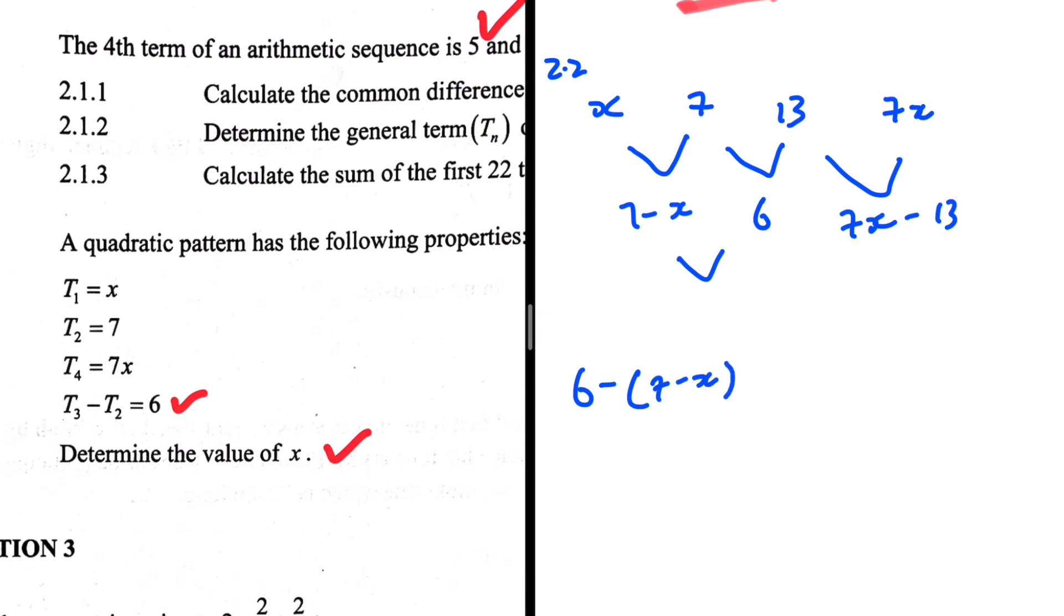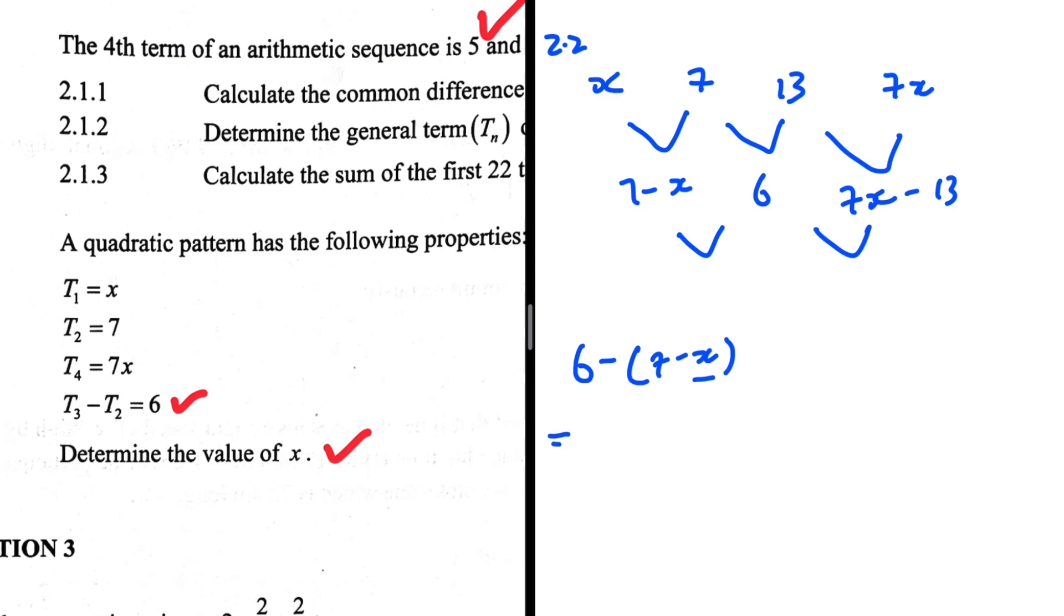A lot of people will make a mistake here because of this minus sign that is inside outside and this minus sign that is inside, so you have to be very careful when you have a situation like that. 6 minus 7 is minus 1, and then minus multiplied by minus will give us positive, so we have x minus 1 which is here. And then now we're going to have 7x minus 13 minus 6. This will give us 7x minus 19. So here we have 7x minus 19.